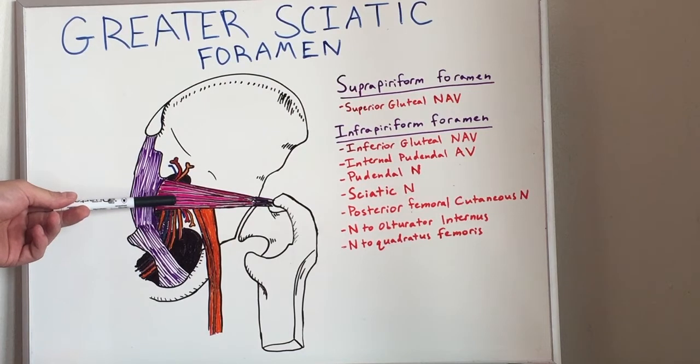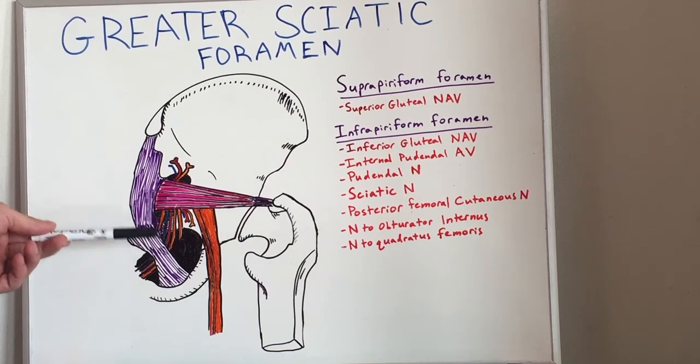We also have here the nerve to the obturator foramen, and the nerve to quadratus femoris, and they innervate precisely what the nerve has been named for.